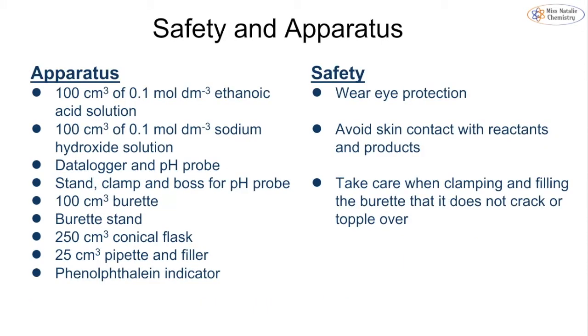When we're doing this particular reaction, we are using ethanoic acid and sodium hydroxide. We're using a data logger and a pH probe. We've got our 100 cm³ burette, a conical flask, a pipette filler, and a phenolphthalein indicator. We want to make sure that we're wearing eye protection and we avoid skin contact with our reactants and products, and make sure that we take care when we clamp or fill our burette.